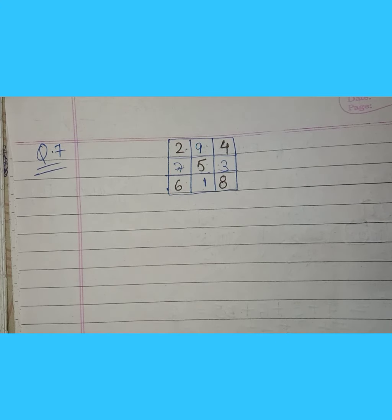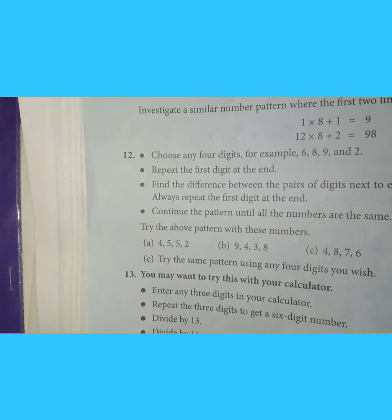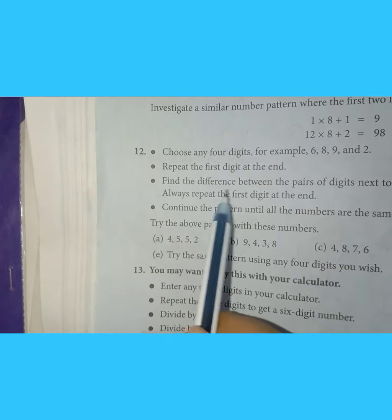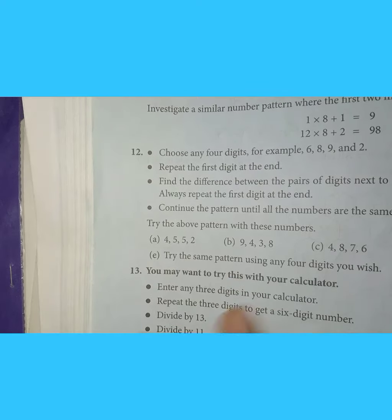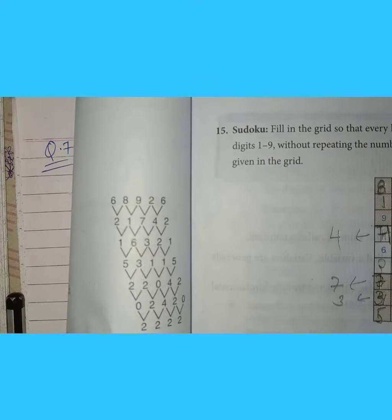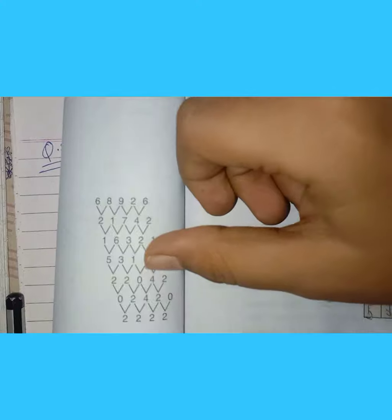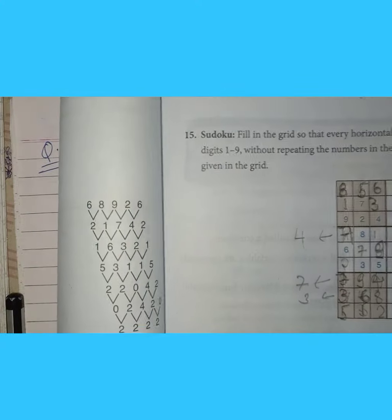Now let's move to another question. The question is: choose any 4 digits — for example, 6, 8, 9, 2. Repeat the first digit at the end. Find the difference between each pair of adjacent digits. Always repeat the first digit at the end and continue the pattern until all numbers are the same. We will try this pattern — we will do the E part and we can take any number we wish.